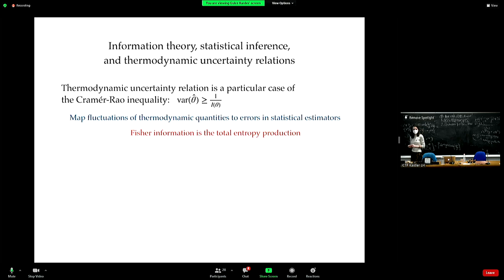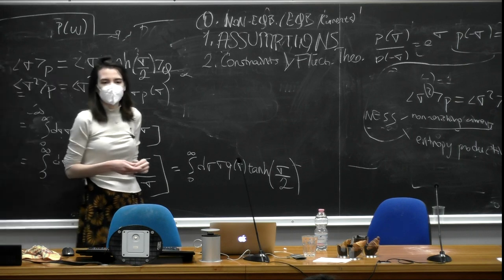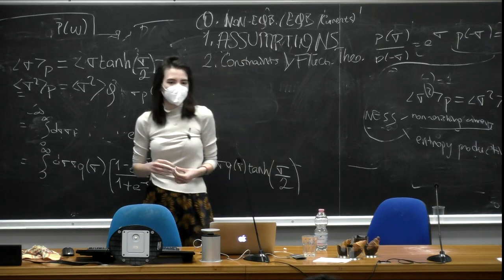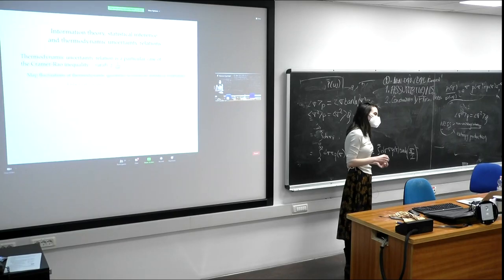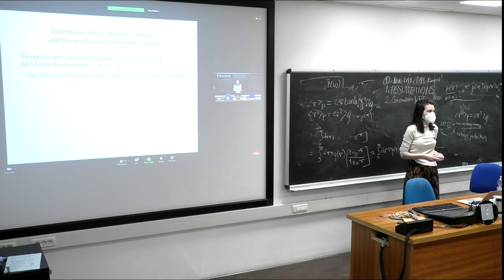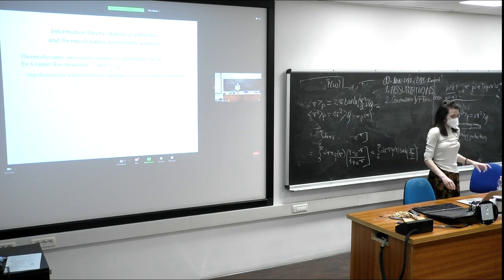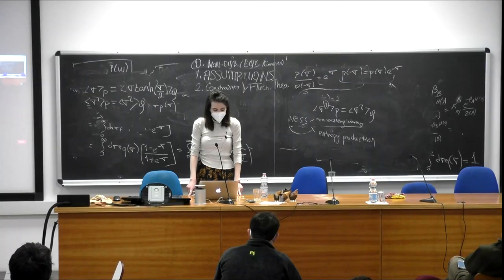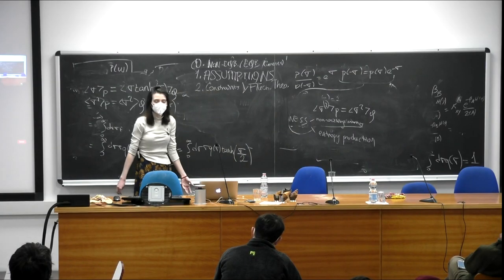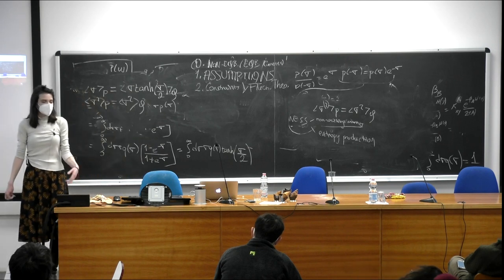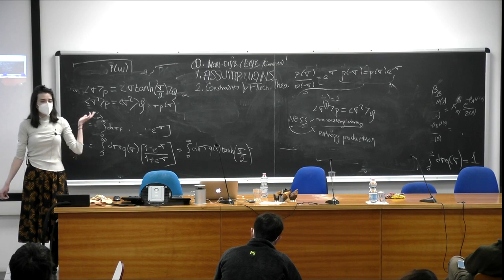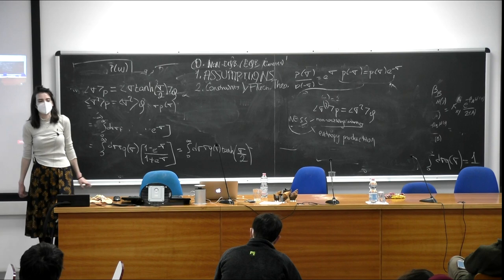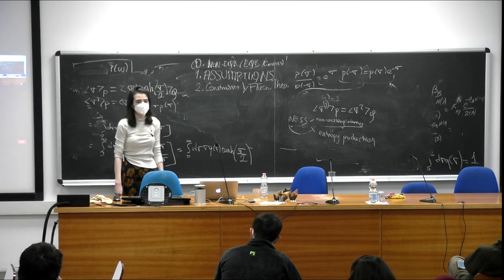In the first five years that people worked on TURs, they also didn't know why they were working with this precision term — the variance-to-mean-square ratio. But there is a derivation of TURs from the Cramér-Rao bound that basically tells you where this precision term is coming from. There is an interesting history of uncertainty relations that can be derived by Cramér-Rao bounds — even the good old Heisenberg uncertainty relation can be derived this way.